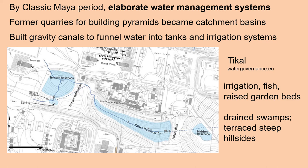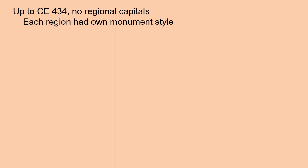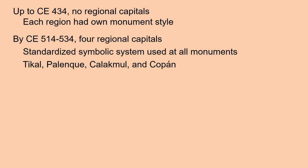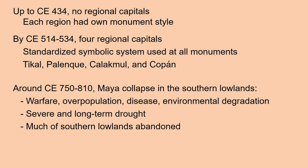Up to Common Era 434, there were no regional capitals, and each region had its own monument style. But by 514 to 534, we can see four regional capitals with a standardized symbolic system used at all monuments. These capitals were Tikal, Palenque, Kalakmul, and Copan. Around 750 to 810, in the southern lowlands, the Mayan civilization collapsed and much of the southern lowlands were abandoned. This appears to have been due to warfare, overpopulation, disease, environmental degradation, and severe and long-term drought.